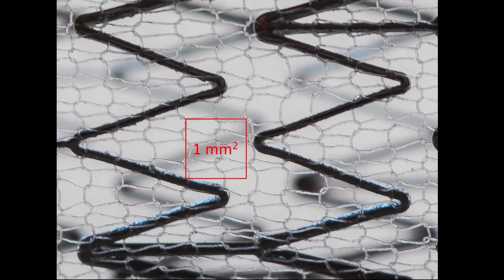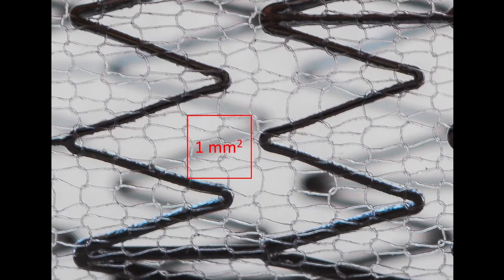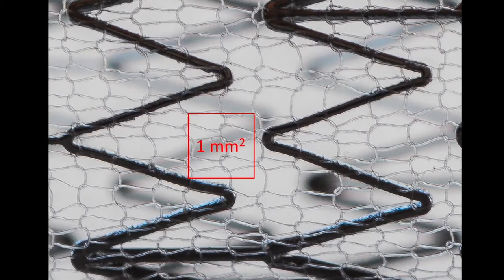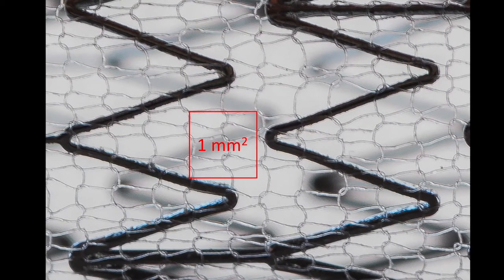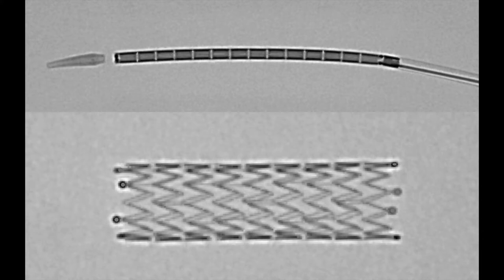The micro net has an average pore size of 150 to 180 microns and is designed to prevent embolization during and post procedure. The stent X-ray visibility is good as the stent is highly radiopaque.